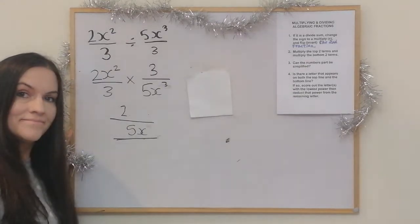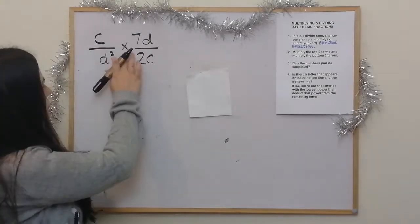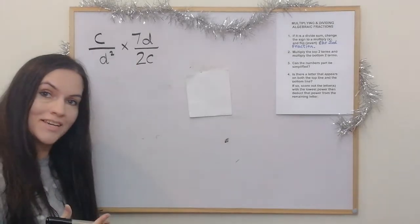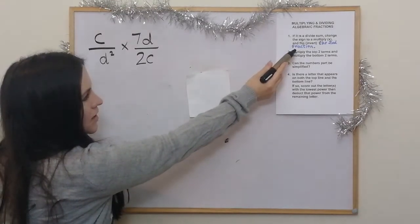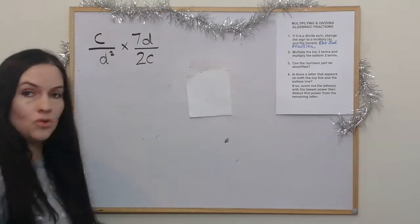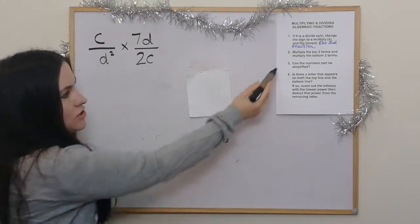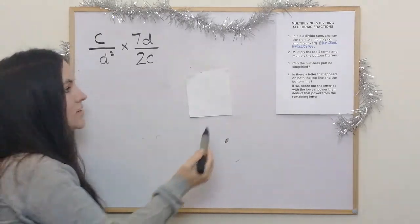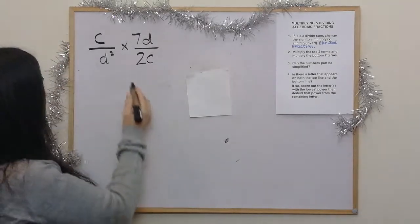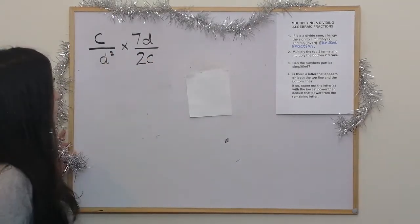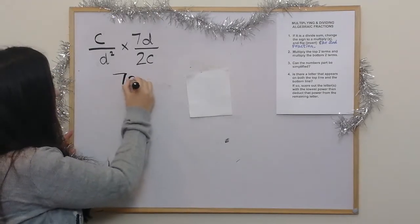I'm going to do another example. This time it's a multiply, so we'll just go through the four steps again. Step 1 says if it's a divide sum change the sign — but we don't need to because it's not a divide, so we go on to step 2. Multiply the top two terms: c times 7d gives me 7cd. And then multiplying the bottom two terms, d squared times 2c gives 2cd.